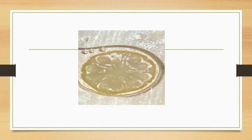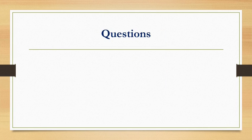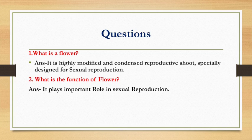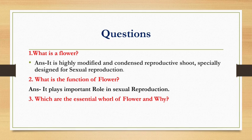So students, I hope you have followed. This is the TS of ovary — you can see pentacarpellary syncarpous ovary with five locules and axile placentation. Different questions are given at the end of the practical in the handbook of practical Balbharti book. What is a flower? It is a highly modified and condensed reproductive shoot, specially designed for sexual reproduction. What is the function of the flower? It plays a very important role in sexual reproduction.